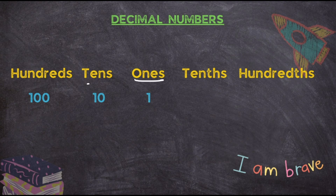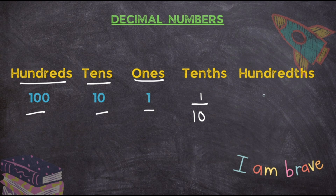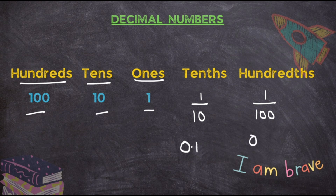To the left we have ones, tens, hundreds with place values 1, 10, 100. To the right comes tenths, written as 1 upon 10, and hundredths, written as 1 upon 100. We don't leave these as fractions — when you convert by dividing 1 by 10, you get 0.1, and that is where decimal numbers come from.